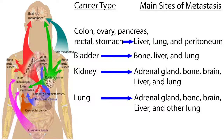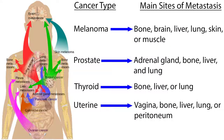Kidney cancer can move to the adrenal gland, bone, brain, liver, or lung. Lung cancer goes to the adrenal gland, bone, brain, liver, or the other lung. Melanoma can go to bone, brain, liver, lung, skin, or muscle. Prostate cancer metastasizes to the adrenal gland, bone, liver, and lung. Thyroid cancer moves to the bone, liver, or lung. Uterine cancer can move to the vagina, bone, liver, lung, or peritoneum.